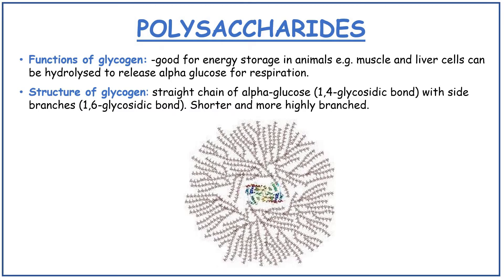Functions of glycogen: glycogen is good for energy storage in animals, for example muscle and liver cells, and can be hydrolysed to release alpha glucose for respiration. Structure of glycogen: straight chain of alpha glucose with 1,4 glycosidic bonds and side branches of 1,6 glycosidic bonds. It is shorter and more highly branched than starch.